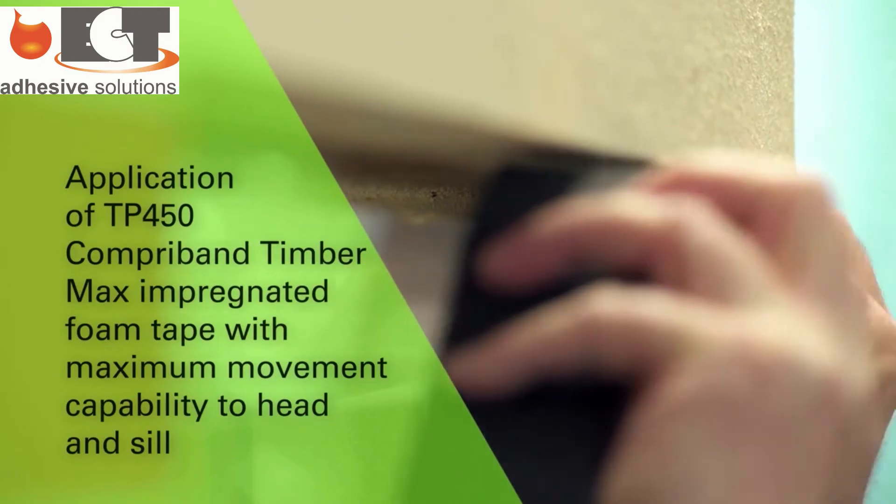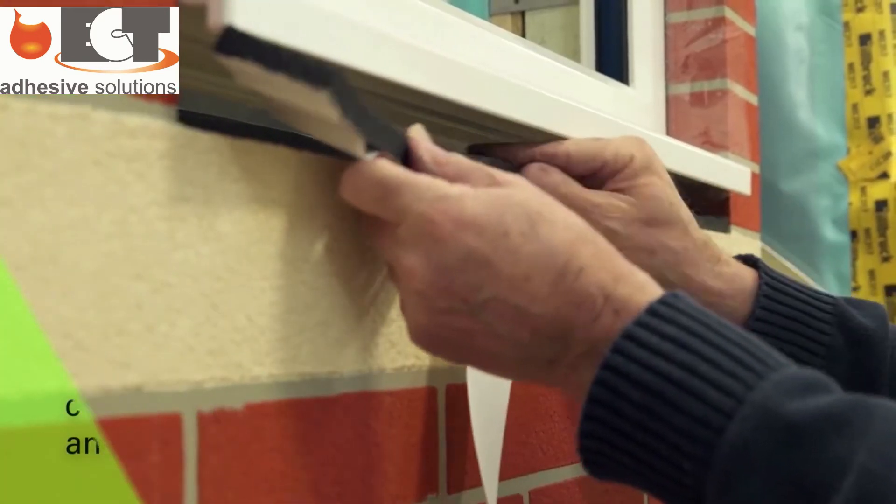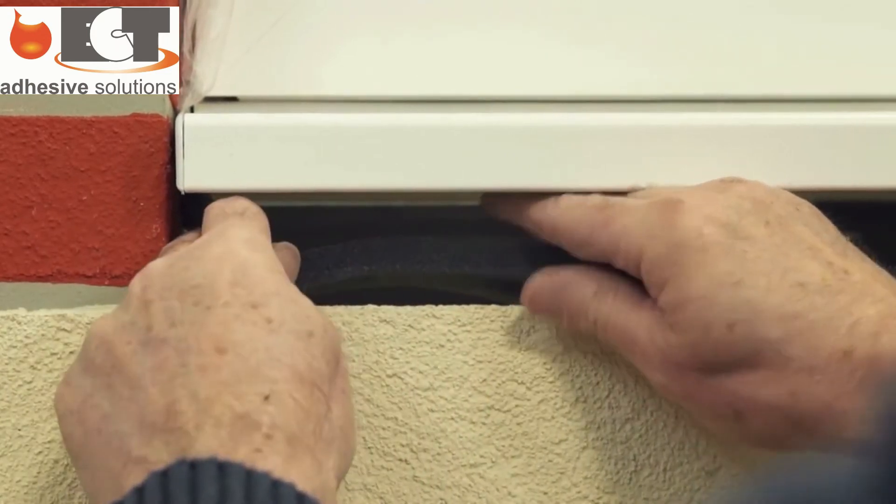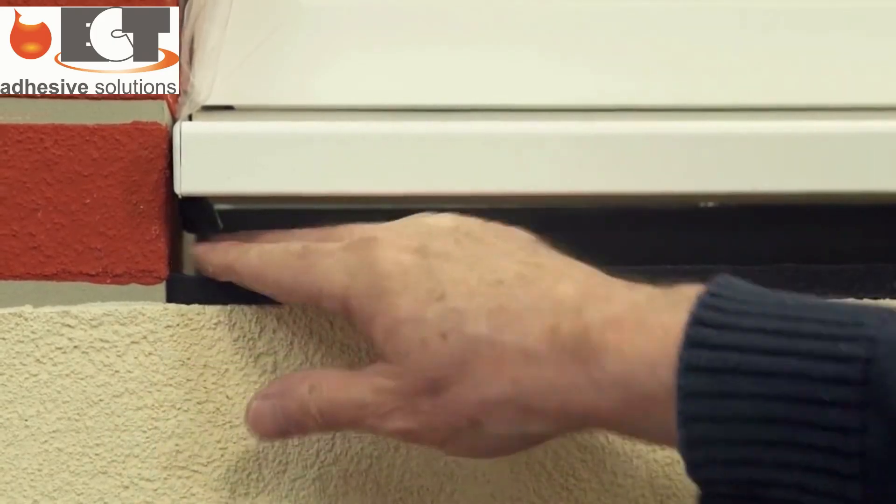Compreband Timbermax TP450 is inserted into the gap at the head and sill. TP450 has a maximum movement capability of up to 37 millimeters, sufficient to cope with a gap varying from 13 to 50 millimeters.